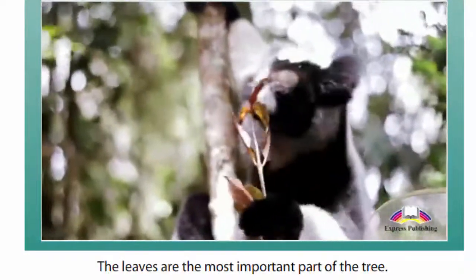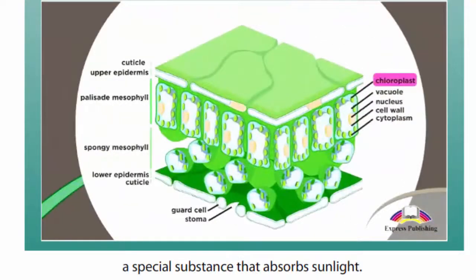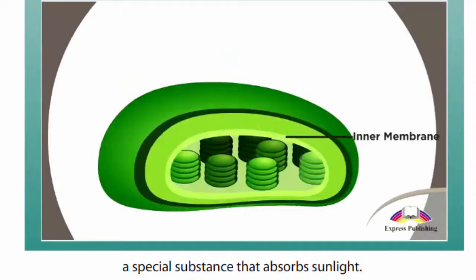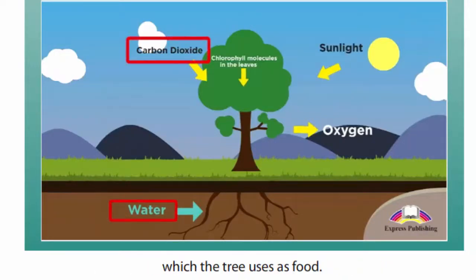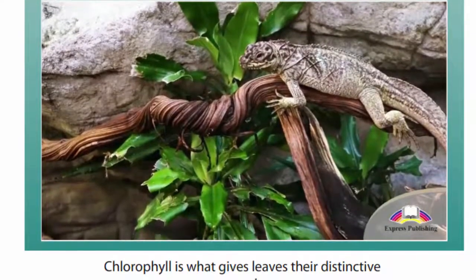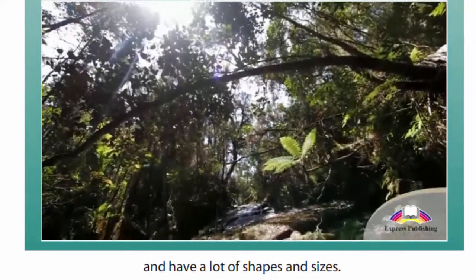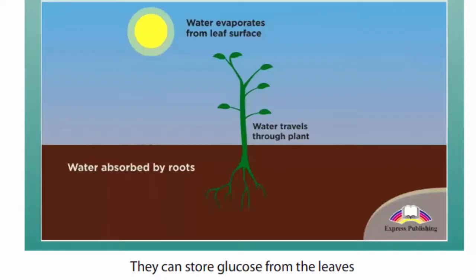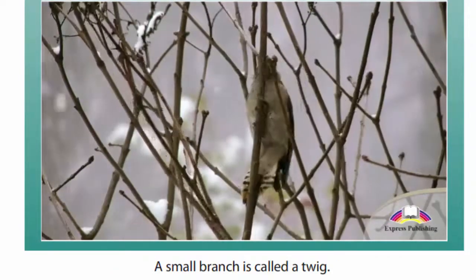The leaves are the most important part of the tree. They are full of chlorophyll, a special substance that absorbs sunlight. It allows the tree to turn water and carbon dioxide into glucose, which the tree uses as food. Chlorophyll is what gives leaves their distinctive green colour. Branches are connected to the trunk and have a lot of shapes and sizes. They can store glucose from the leaves and serve as a pipe for water and nutrients. A small branch is called a twig.